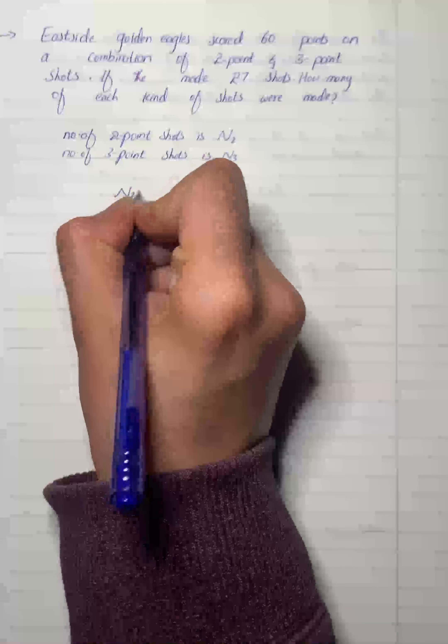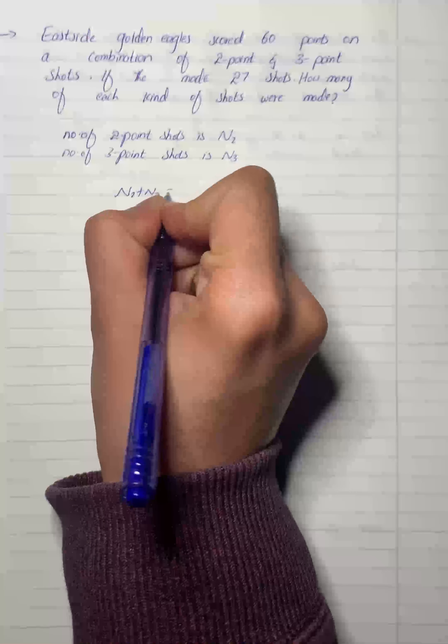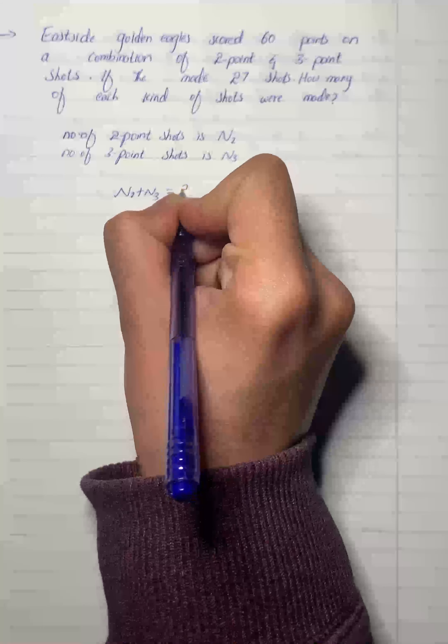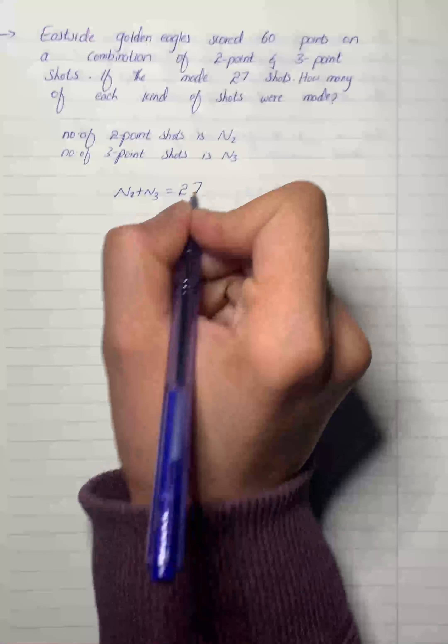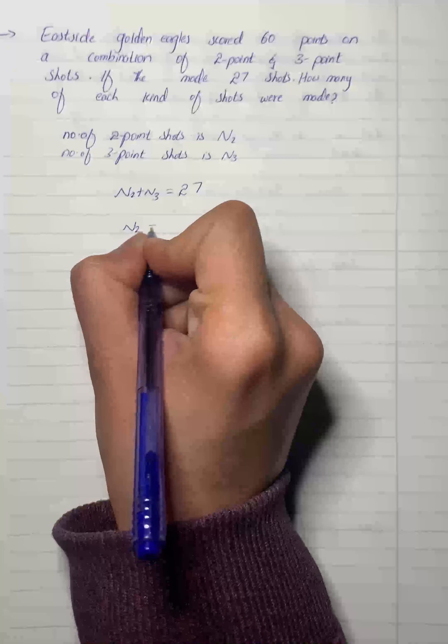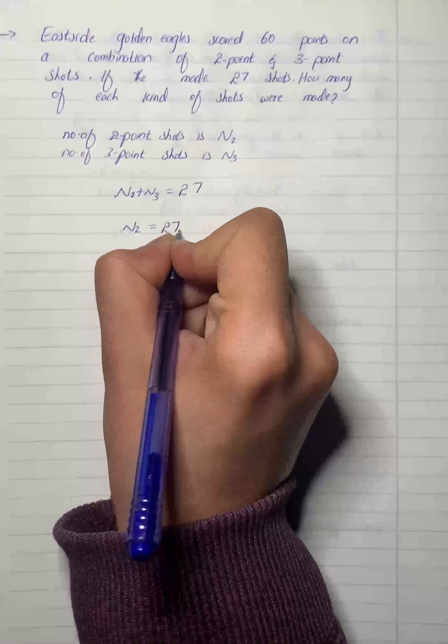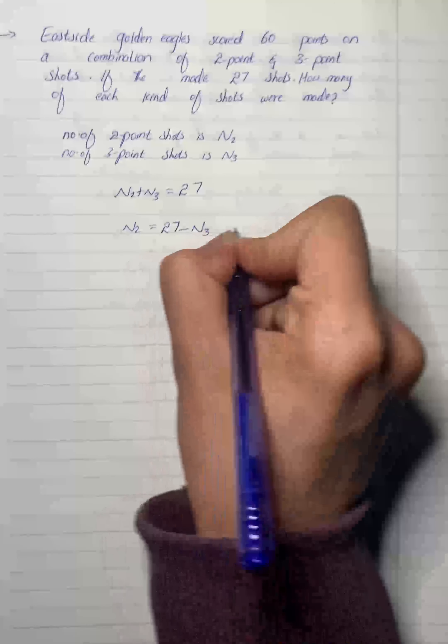Now what we're going to do is, the given is that n2 plus n3 equals 27. So n2 equals 27 minus n3. Let it be equation number 1.